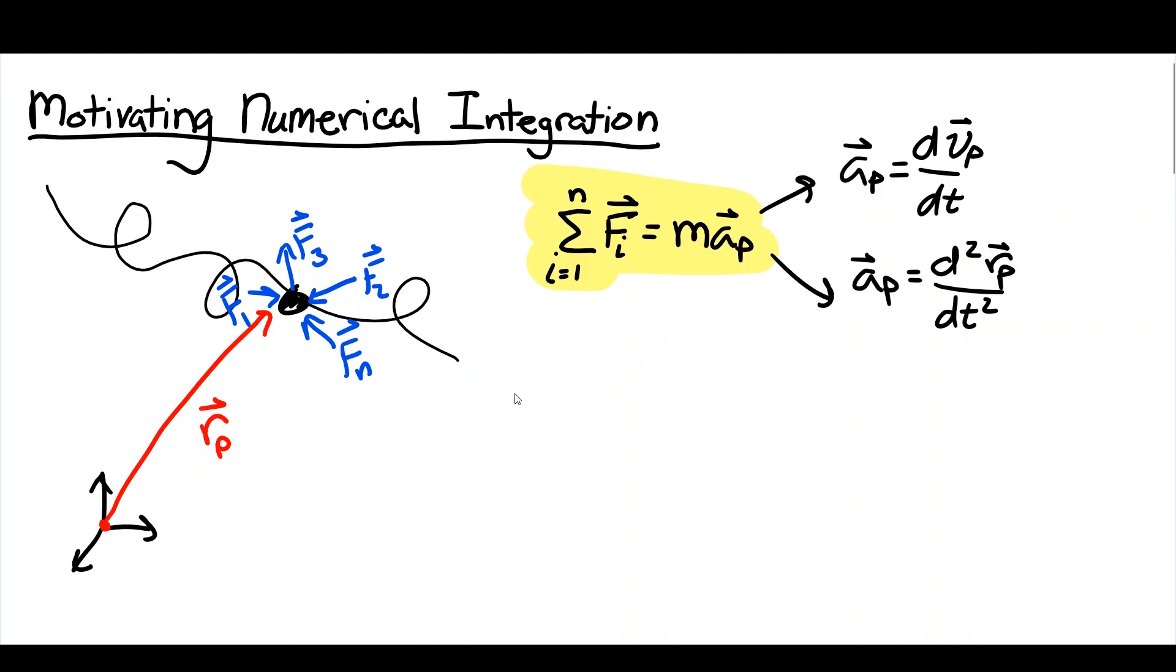Now if you remember your differential equations class, some differential equations are very easy to solve. So if this equation of motion f equals ma were quite simple, perhaps we could directly write down what the velocity is at any time t. And if it's a simple equation, maybe we can even write what r of p is at any time t. This is a closed form solution. And these are typically the ones that you've dealt with in your differential equation courses.